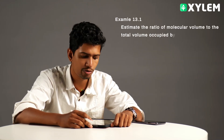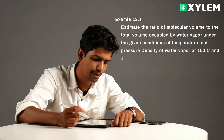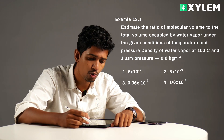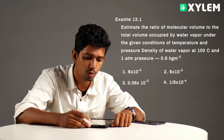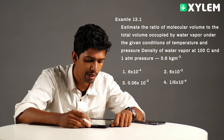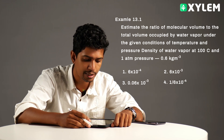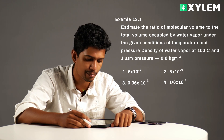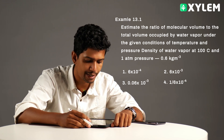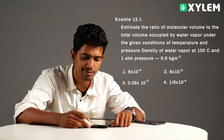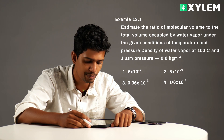NCERT example 13.1. We need to estimate the ratio of molecular volume to the total volume occupied by water vapor under the given conditions of temperature and pressure. The density of water vapor at 100 degrees Celsius and 1 atmospheric pressure is given as 0.6 kg per meter cube.